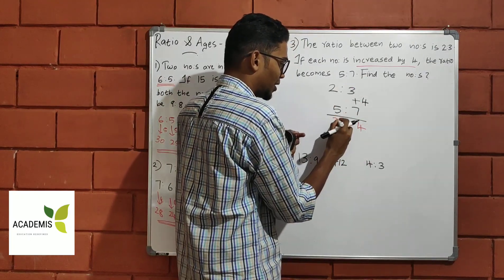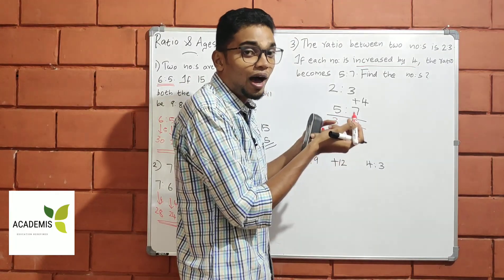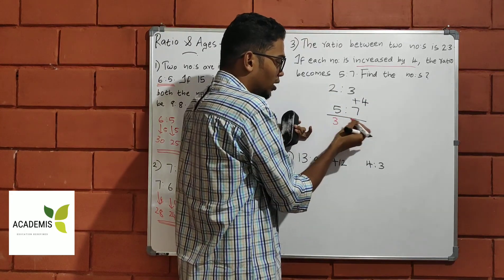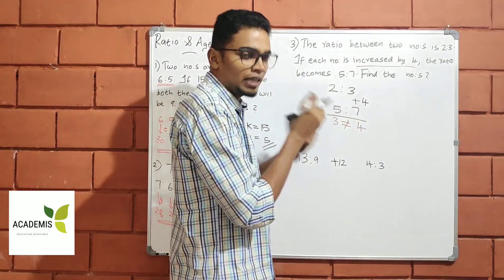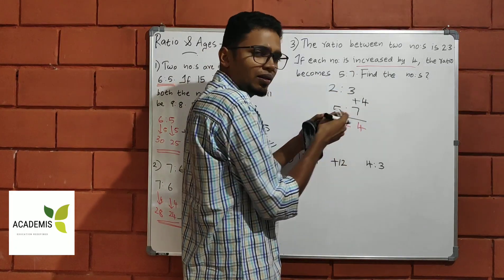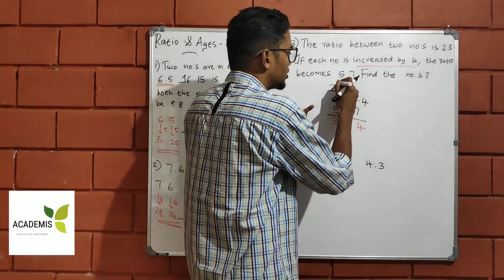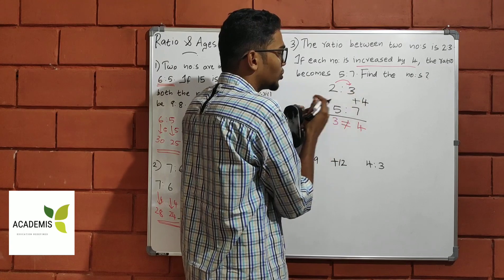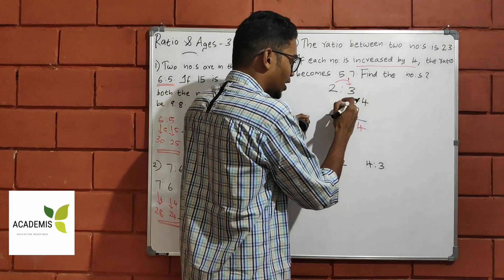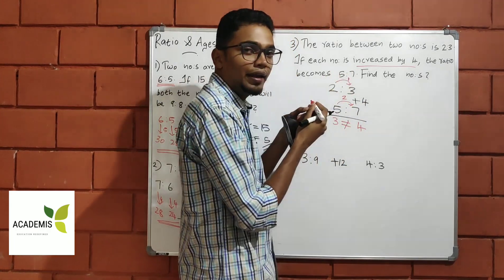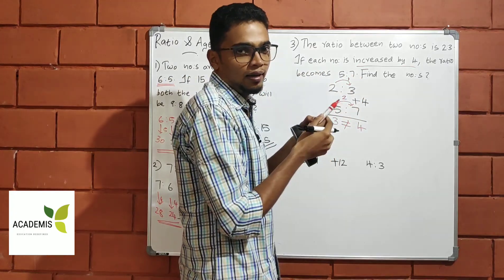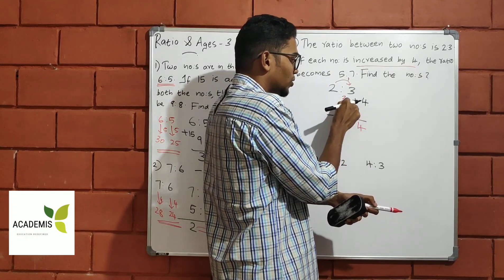We check: 3 minus 2 gives a difference of 1 on the left side. On the right side, 7 minus 5 gives a difference of 2. The corresponding difference is 2. The difference between the two sides is 2.